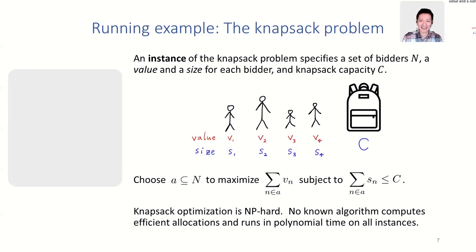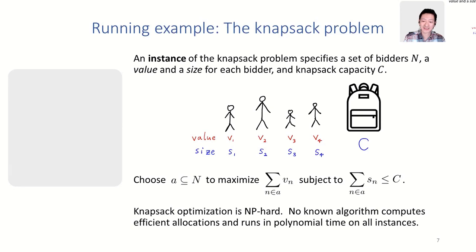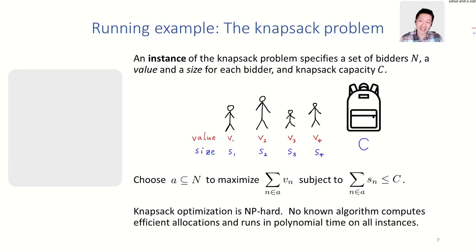I'll use the knapsack problem as the running example. An instance specifies a set of bidders N, each with a value V and a size S. The values are in red, the sizes are in blue, and there's a knapsack capacity C. Our mission is to choose a subset of bidders to pack so as to maximize the sum of their values, subject to the constraint that the sum of their sizes doesn't exceed the knapsack's capacity. This is an integer problem — you pack a bidder or you don't. Think of this like the airline example: if you try to land half a plane, bad things happen. Knapsack optimization is NP-hard.